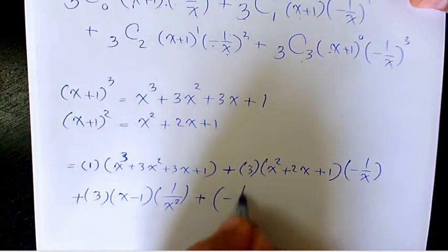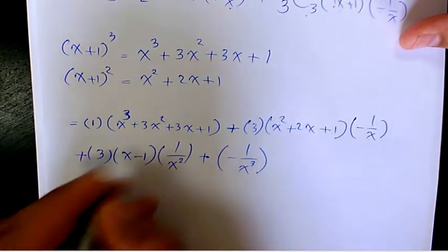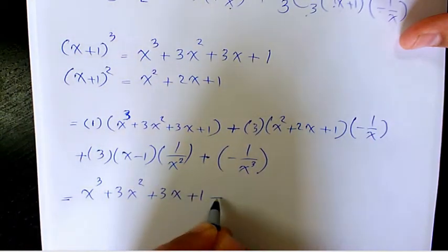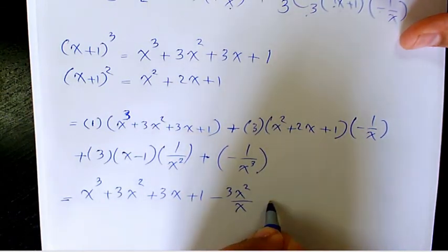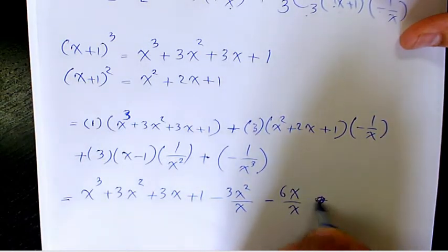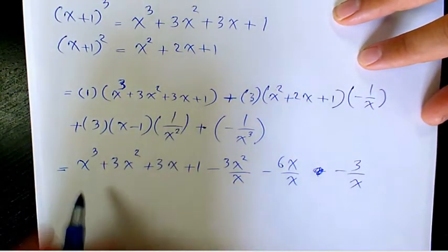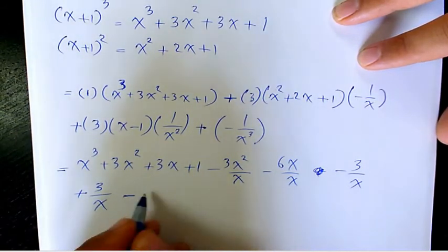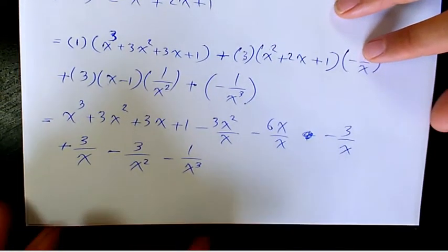When you expand it all out, it's going to be: x³ + 3x² + 3x + 1, minus 3x²/x, minus 6x/x, then negative 3/x. Here you have 3 times x times 1/x, which is going to be 3/x, minus 3/x², minus 1/x³.